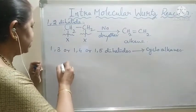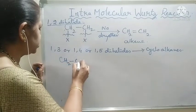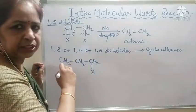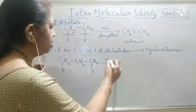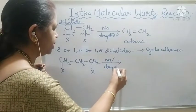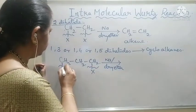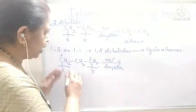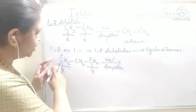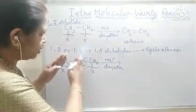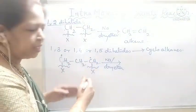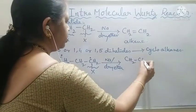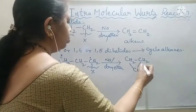If we take a 1,3-dihalide: CH2–CH2–CH2 with three carbons and halogen X on the first and third carbon atoms. When reacted with sodium metal in dry ether, homolytic cleavage occurs, resulting in the formation of free radical sites on the terminal carbon atoms. There is no bond between the first and third carbon atoms, so these two free radicals join together to form a new sigma bond, which results in a cyclic compound. It is a three-carbon compound, which results in the formation of cyclopropane.